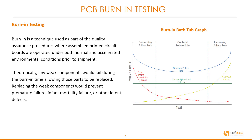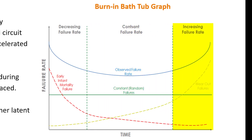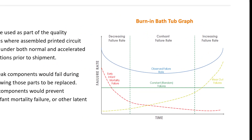On the right-hand side we can see a typical burn-in bathtub graph. The decreasing failure rate shows the early infant mortality failures. The constant failure rate covers constant or random failures, whereas the increasing failure rate shows wear-out failures. This graph plots failure rate over time.